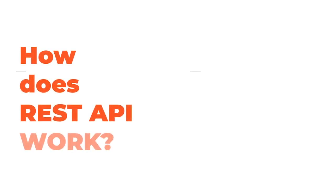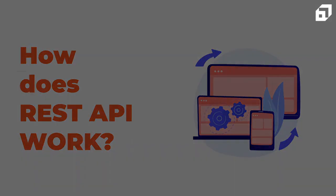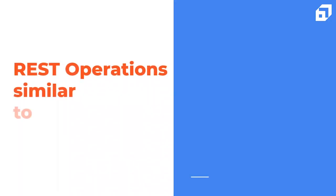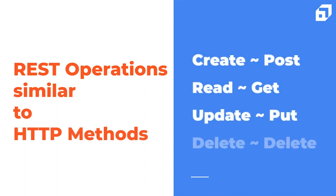REST APIs communicate via HTTP requests to perform standard database functions. These functions include create, read, update, and delete records — also known as CRUD — within a resource. For example, a REST API would use a GET request to retrieve a record, a POST request to create one, a PUT request to update a record, and a DELETE request to delete one. All HTTP methods can be used in API calls.